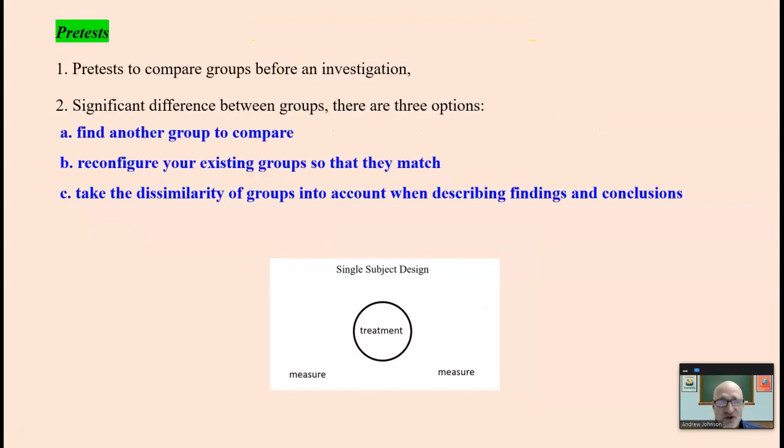But two ways to do it is pre-test and matching. The first one is pre-test. To compare groups before an investigation, you simply give a test on the variables you're looking to examine. If they're relatively similar, you can continue the experiment. However, if there's significant differences between the groups, you've got three options. You can find another group to compare, reconfigure your groups so that they match, or take the dissimilarity of groups into account when describing findings and conclusions. Single subject design, you don't have to do that, of course, because you're looking at just one group. But this is a little bit more tricky in the statistical analysis.